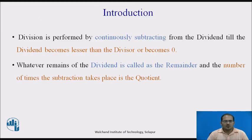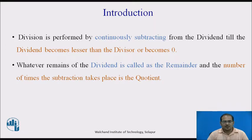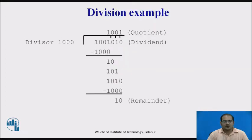Division is performed by continuously subtracting from the dividend till the dividend becomes lesser than the divisor or becomes zero. Whatever remains of the dividend is called the remainder, and the number of times the subtraction takes place is the quotient. This is the normal method of division.